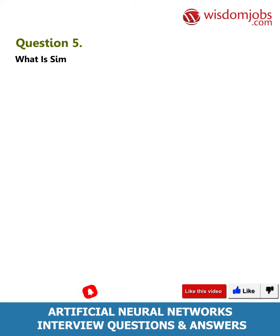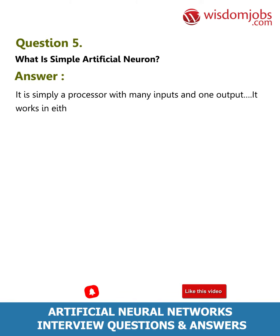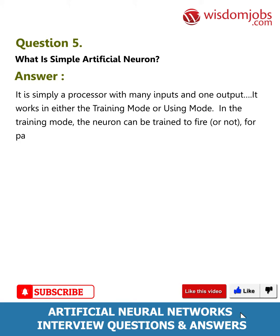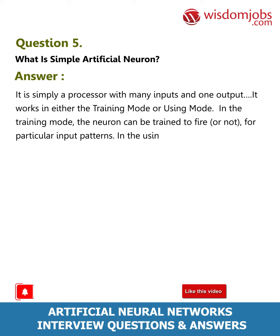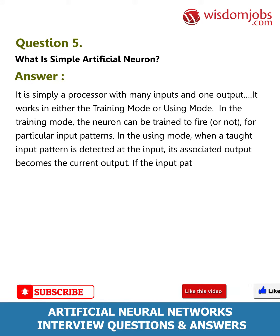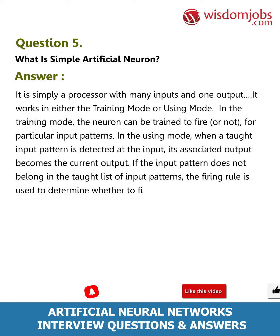Question 5: What is a simple artificial neuron? It is simply a processor with many inputs and one output. It works in either training mode or using mode. In training mode, the neuron can be trained to fire or not for particular input patterns. In using mode, when a taught input pattern is detected, its associated output becomes the current output. If the input pattern is not in the taught list, the firing rule is used to determine whether to fire or not.